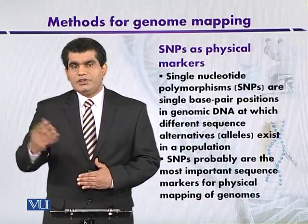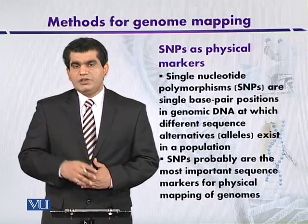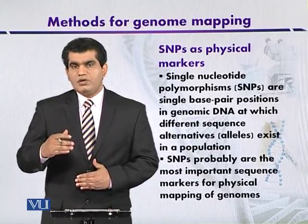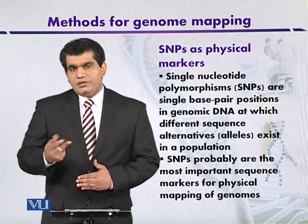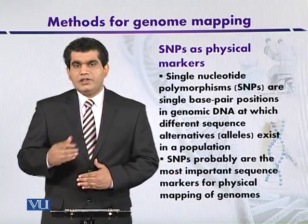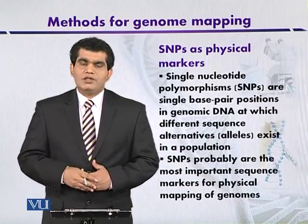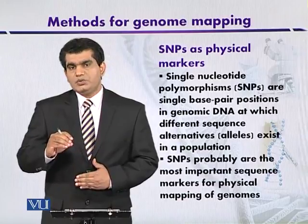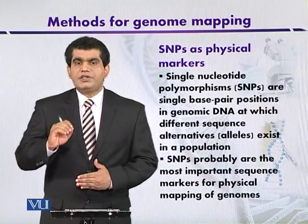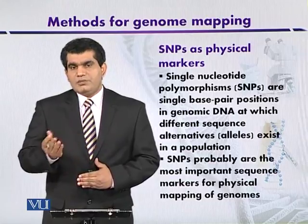In sickle cell anemia, there is only one substitution of an amino acid — glutamic acid is replaced with valine — because one nucleotide base pair is replaced, changing the sequence of the triplet codon. In place of glutamic acid there is valine, and a disease results which is called sickle cell anemia. This single nucleotide change does not only influence the phenotype of the trait, but can also change the restriction site of the enzyme due to that one nucleotide change.